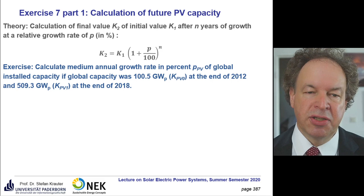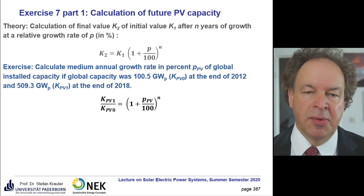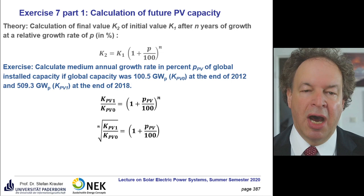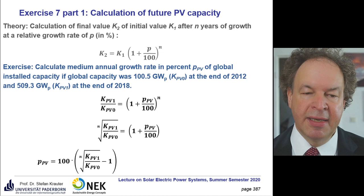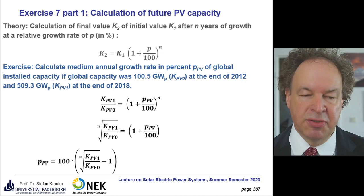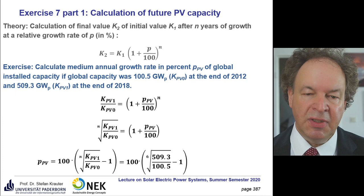So how do we apply that? We just put in the formula. We want to know the growth rate P_PV. The formula is: P_PV equals 100 times the nth root of (K_PV divided by K_PV0), where K_PV0 was the initial value of 105 gigawatts, minus 1. That is our P_PV in percent.